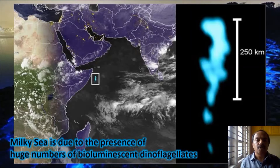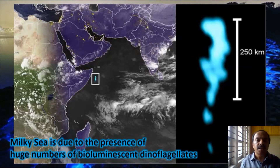There is a small island of Somalia in the Indian Ocean, about 250 kilometers in length. This part of the sea where the islands are is full of bioluminescent dinoflagellates. A picture taken from space shows this region looking like a milky sea, and it is popularly called the milky sea — caused by bioluminescent dinoflagellates.